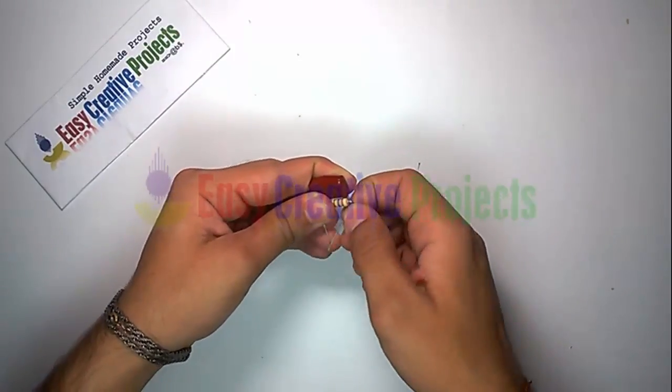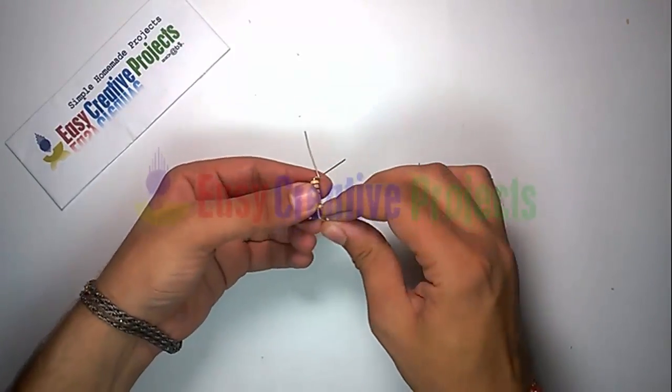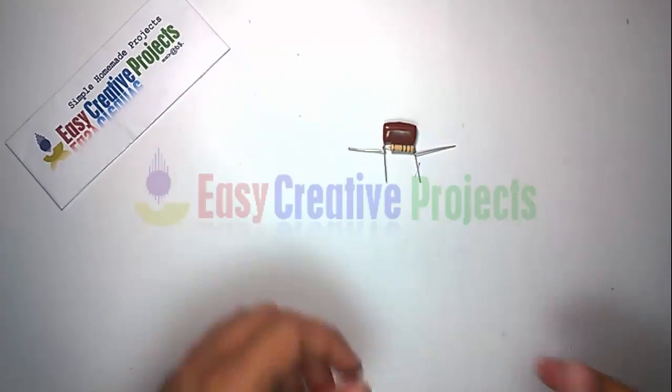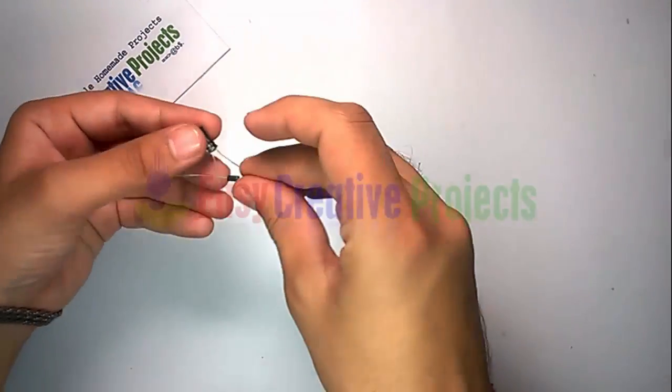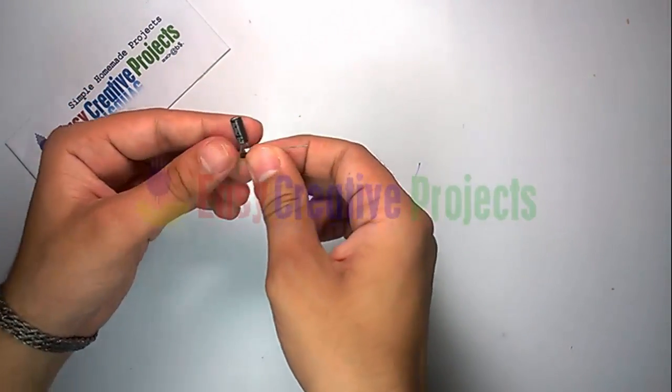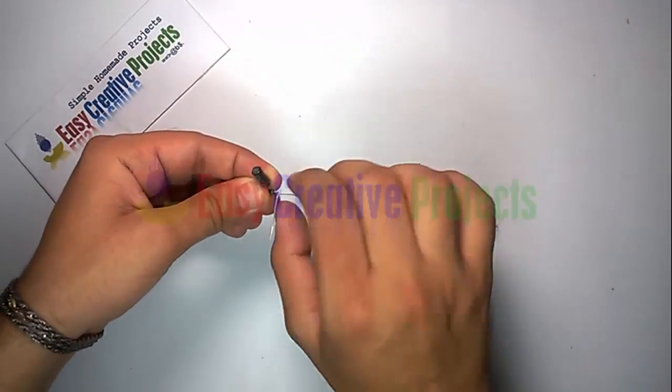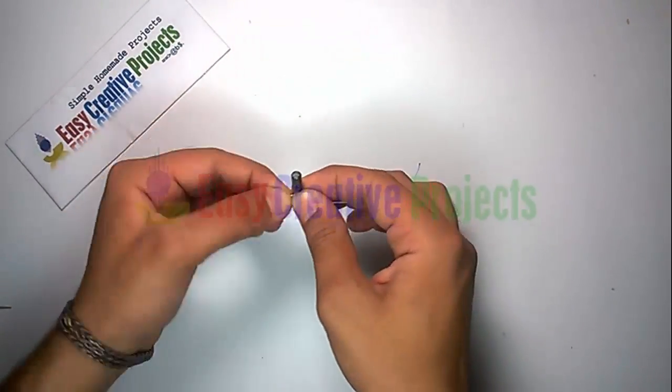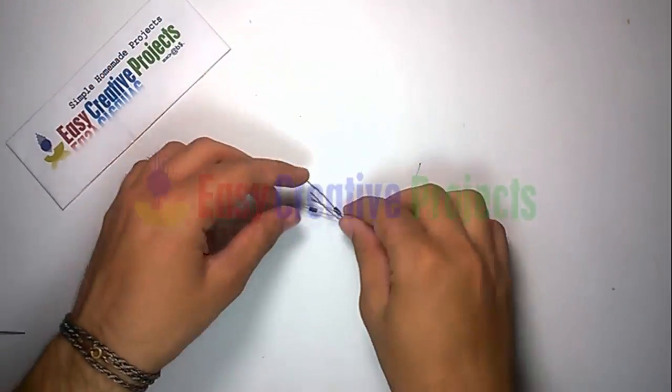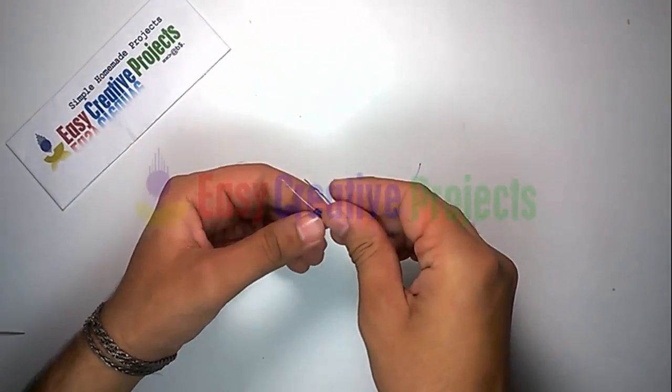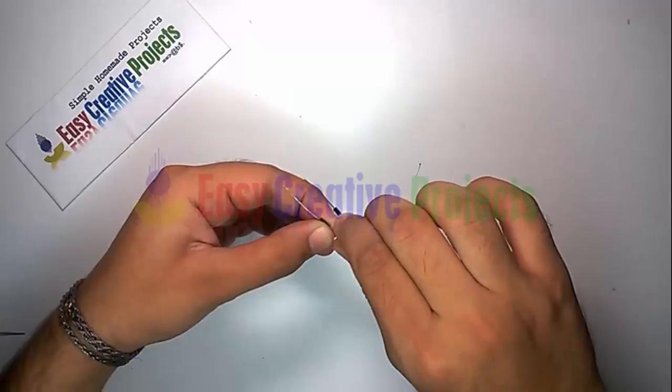Connect 400 volt capacitor with 1M resistor like this. Now connect 1 diode with capacitor, like diagram. Connect 4 diodes in square like this.